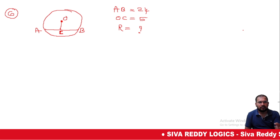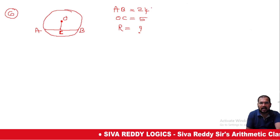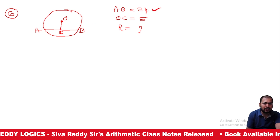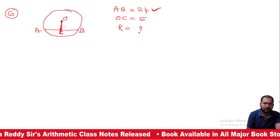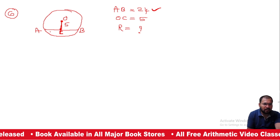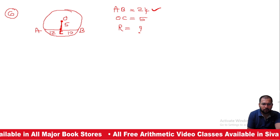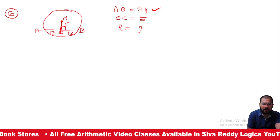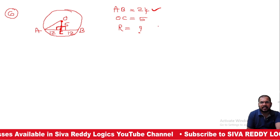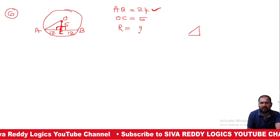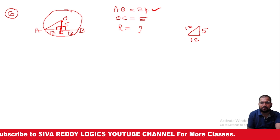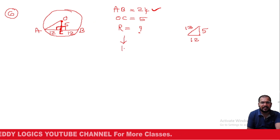Now, a circle problem: a chord is given as AC = 20 m, and from center the distance OC is 5. The triangle sides are 5, 12, 13, and the radius is 13.